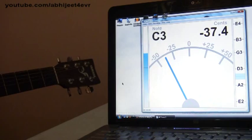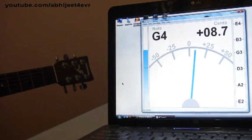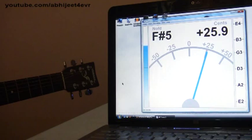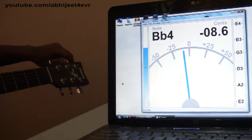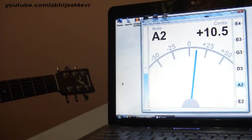There we are. We cannot get to 0.00, that is virtually impossible. So try to get as close as possible to the center reading. Proceed further with the 4th string, 5th string and 6th string respectively.